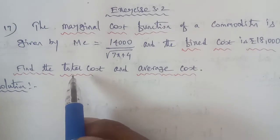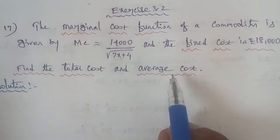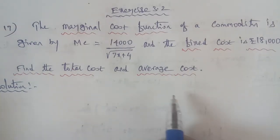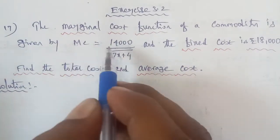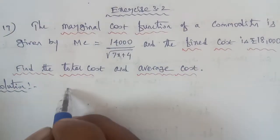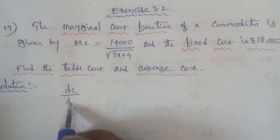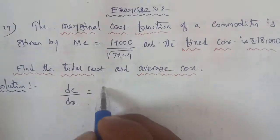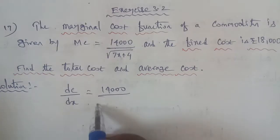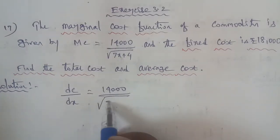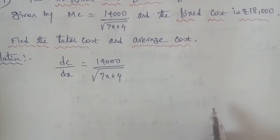To find the total cost and average cost, we start with the marginal cost. Using the simple theorem, that is DC by DX, we apply integration. So DC by DX is equal to 14,000 divided by square root of 7x plus 4. We separate the variables and apply integration.